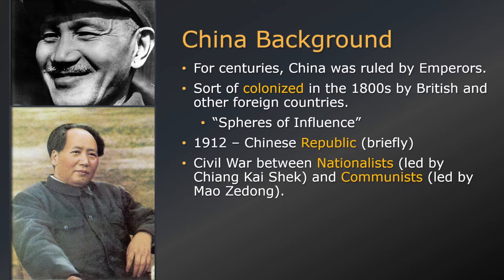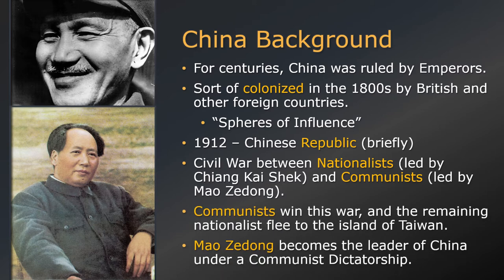In 1912, the last Chinese emperor was overthrown by a Republican government, and for a brief period, China was legitimately a republic. But not too long afterwards, a civil war broke out between the nationalists, led by Chiang Kai-shek, and the communists, led by Mao Zedong. Ultimately, the communists won, and the nationalists fled to the island of Taiwan — where, by the way, they're still there. Mao Zedong now becomes the new dictator of communist China.